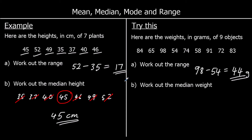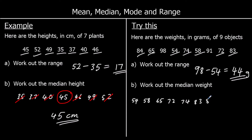Work out the median weight — that's the middle number, so we need to put them in order first: fifty-four, fifty-eight, sixty-five, seventy-two, seventy-four, eighty-three, eighty-four, ninety-one, ninety-eight. We've got nine numbers, so we cross off four on both sides. The middle number — the median — is seventy-four, so it's seventy-four grams.